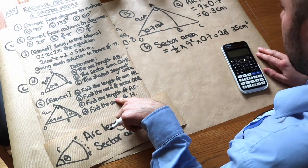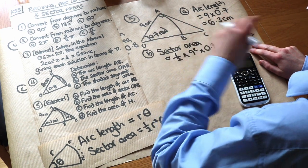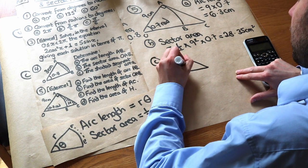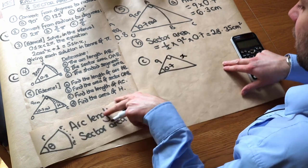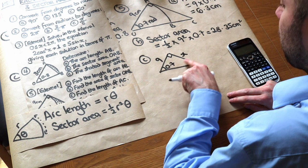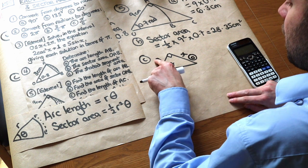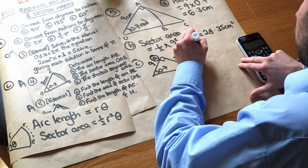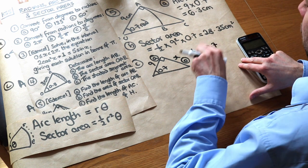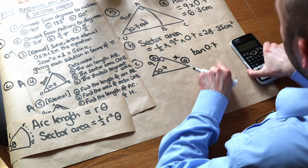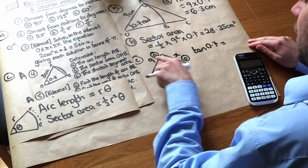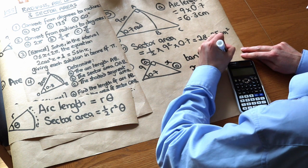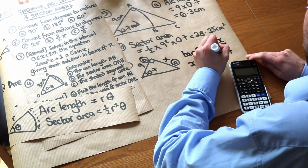Next, find the length AC. We can't assume it equals 9 cm — this requires simple trigonometry. Looking at the right-angled triangle with angle 0.7 radians at O and the side of 9 cm adjacent to it, AC is opposite. So we use tan: tan(0.7) = x/9, giving x = 9 tan(0.7). Make sure your calculator is in radians mode. That gives x = AC = 7.581 cm.